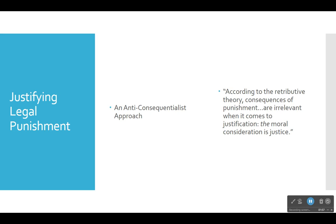Just as I said in the second unit, the Kantian approach is anti-consequentialist because Kant denies that the consequences of an act can make it right or wrong. Similarly, Primoratz takes that approach to this particular issue — it's a Kantian, deontological, and anti-consequentialist approach. According to the retributive theory, consequences of punishment are irrelevant when it comes to justification.